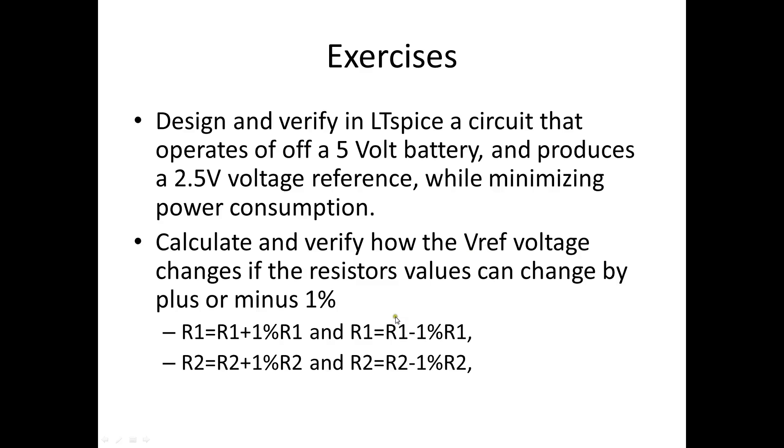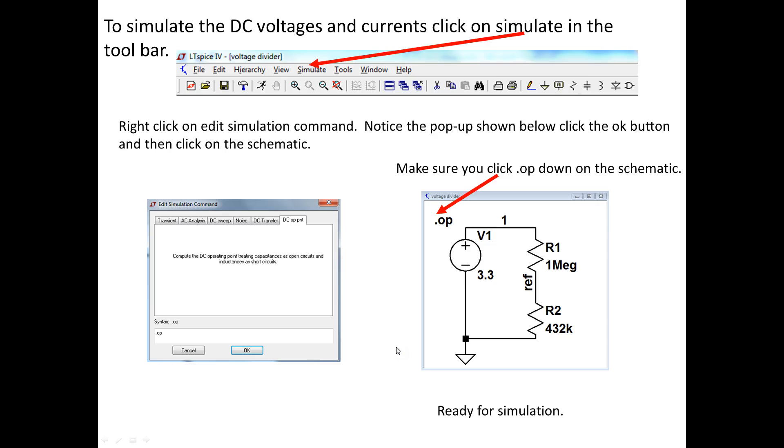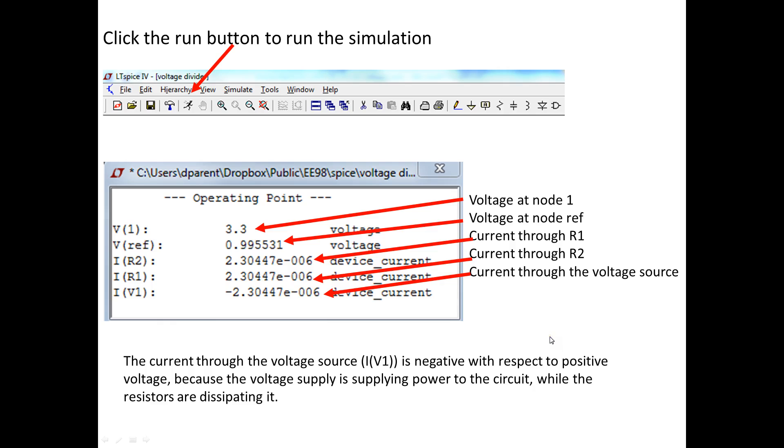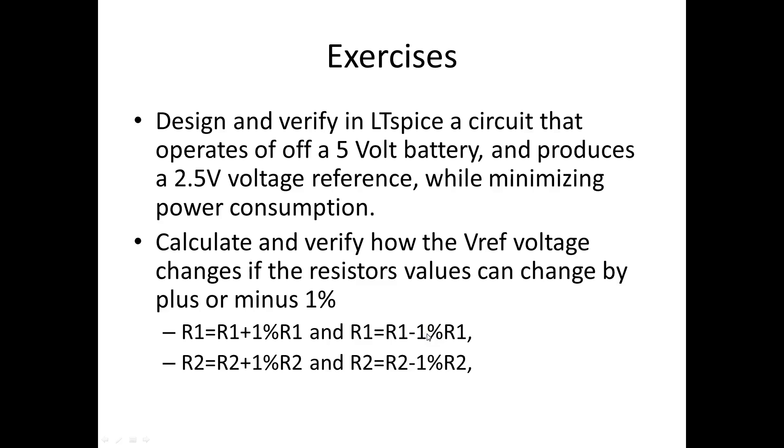Just because we've put in—and let me go back—1 meg or 432K into LT spice, when you go to make your circuit, resistances that you buy have a tolerance; they're not all equal to one another. So we can do a worst case analysis where some resistances are 1% bigger and some resistances are 1% smaller. How much will the reference change? You can do it by hand and you should do it in LT spice.